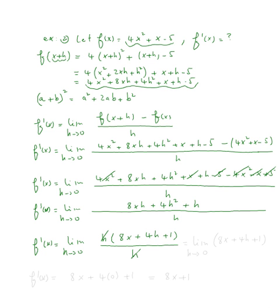We simplify by canceling the h. This gives us the limit as h approaches zero of eight x plus four h plus one. Now we plug in zero for h: eight x plus four times zero plus one, which equals eight x plus one. So f prime of x equals eight x plus one, and we're done with the example.